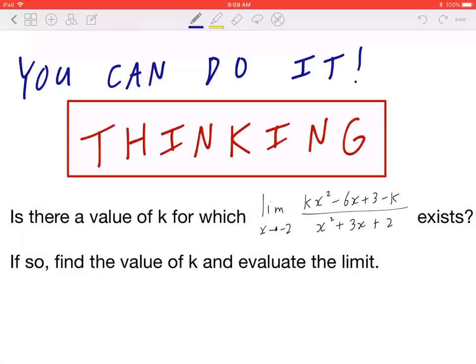Hi everyone, let's take a look at the following thinking problem. Is there a value of k for which the limit of kx² - 6x + 3 - k all over x² + 3x + 2 as x is approaching -2 exists?